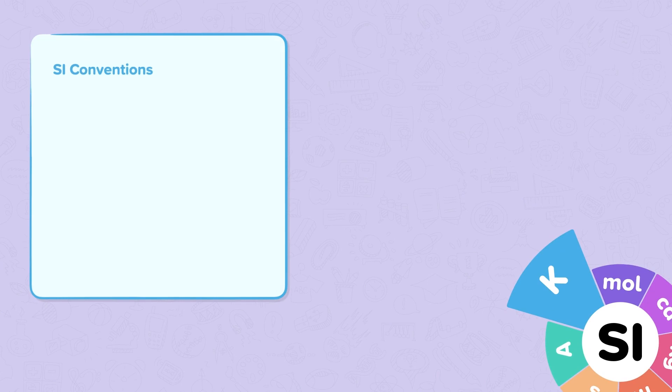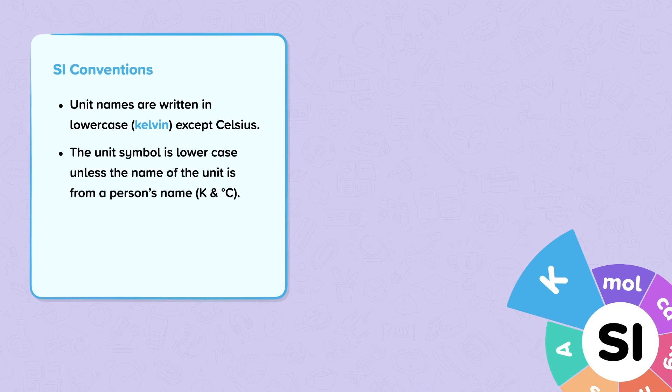SI conventions. Unit names are written in lowercase kelvin, except Celsius. The unit symbol is lowercase unless the name of the unit is from a person's name. A space is left between the numerical value and unit, for example 323 kelvin or 50 degrees C.